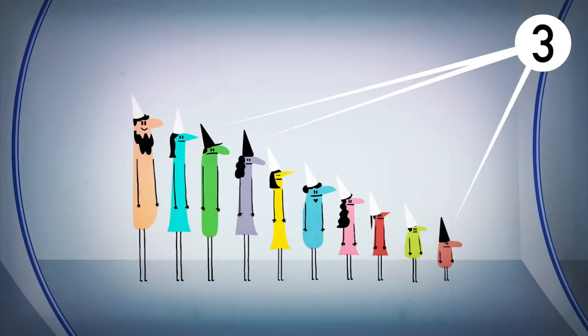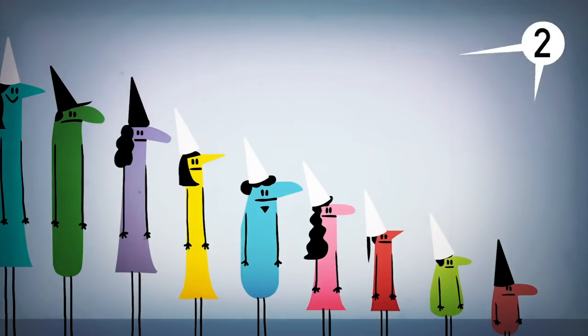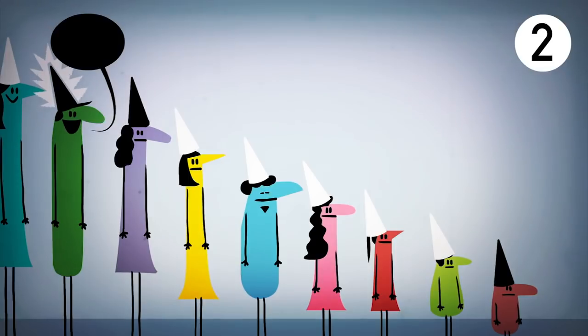Prisoner 2 also sees an odd number of black hats, so she knows hers is white and answers correctly. Prisoner 3 sees an even number of black hats, so he knows that his must be one of the black hats the first two prisoners saw.